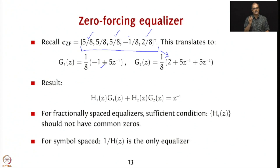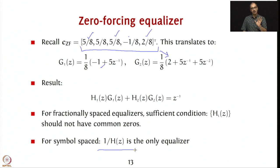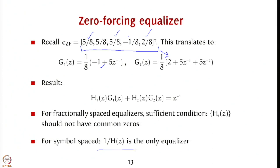This filter-based approach is essentially the same block-based equalizer in disguise, just with a continuous implementation. For symbol-spaced equalizers — where the sample rate equals the symbol rate — 1/H(Z) is the only equalizer, which is a limitation. The zero forcing equalizer is one suboptimal equalizer to consider, but it works well mainly under high SNR or when vector spaces are well separated. It can result in significant noise enhancement, boosting Gaussian noise substantially.